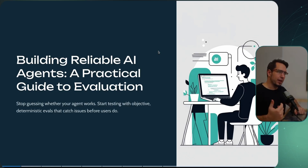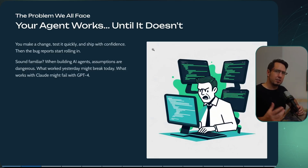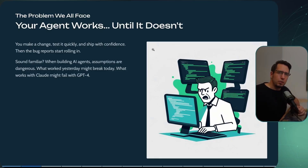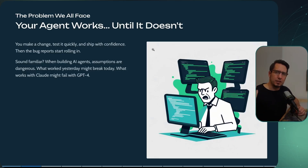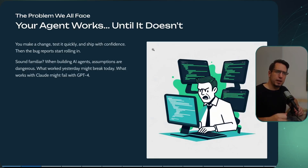We're going to talk about how to actually build reliable AI agents and a practical way of thinking about evals — evaluations — in the long term. You've probably had this before: your agent is working, and then all of a sudden it isn't. You do a few tweaks and you're jumping through hoops, not really knowing if it's getting better or worse. Or a model gets upgraded and everything that used to work doesn't anymore. This is where evals come in — they give you a nice way to track and see progress.